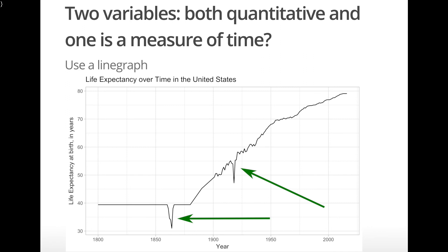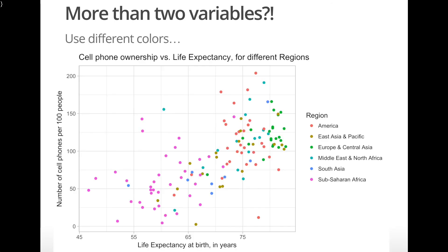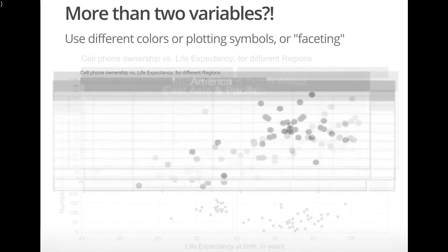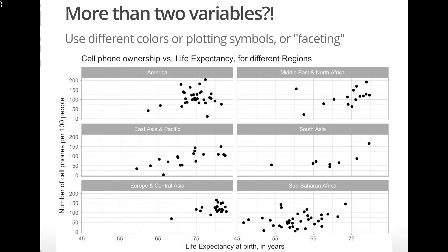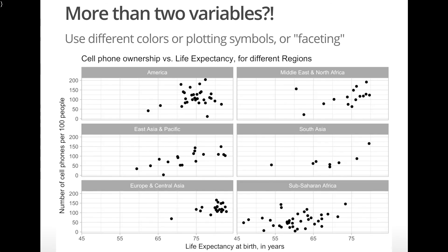This concludes our overview of choosing a graph type when you have one or two variables. Before we end the video, let's briefly explore some ways to visualize more than two variables. One simple way is through the use of color. For example, we just explored the relationship between number of cell phones per 100 people and average life expectancy — but what if we wanted to look at this relationship for different regions in the world, a third variable? We could introduce different colors for each of the different regions, or use different plotting symbols or shapes for each region. There's also something called faceting, which makes a separate graph for each value of the third variable — in this case, six scatter plots for each of the six regions of the world. We see that sub-Saharan countries and some South Asian countries tend to have lower life expectancies and fewer cell phones per 100 people than other regions. It might be interesting to add economic status to this graph — we'll let you think about how you might do this.